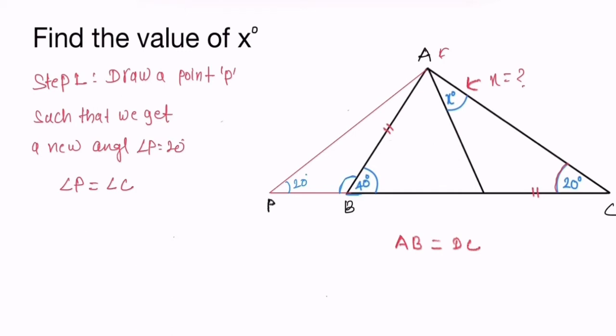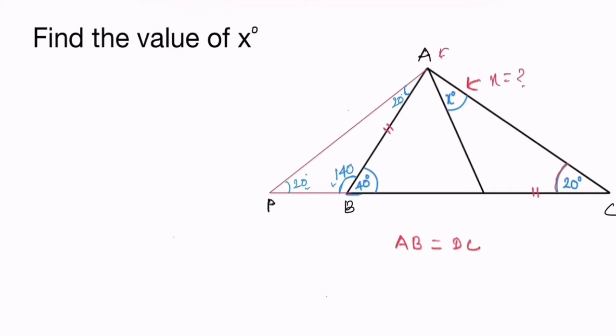So this is 140 degrees by a straight line, and this is 140, this is 20, then this is 20 degrees by triangle law. Then what we do next? Step 2.